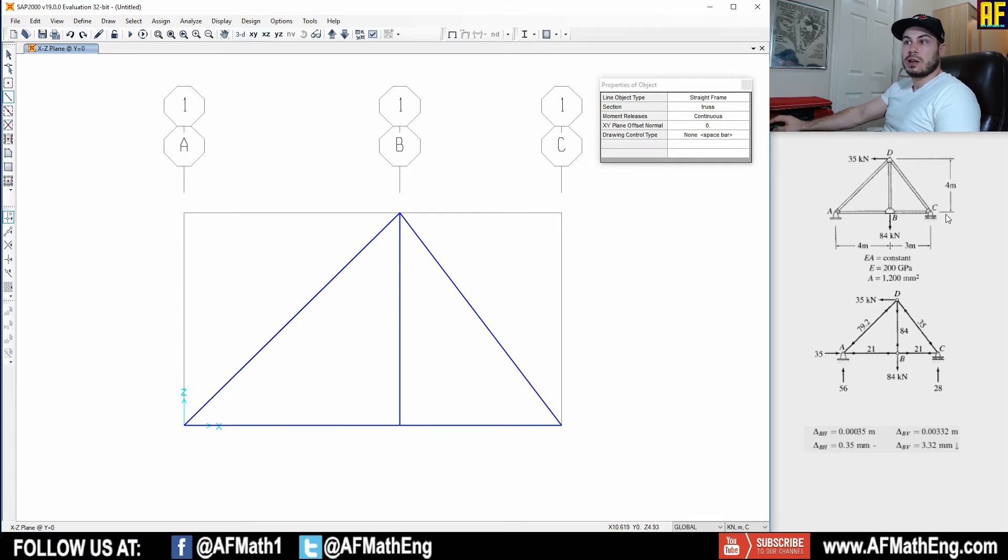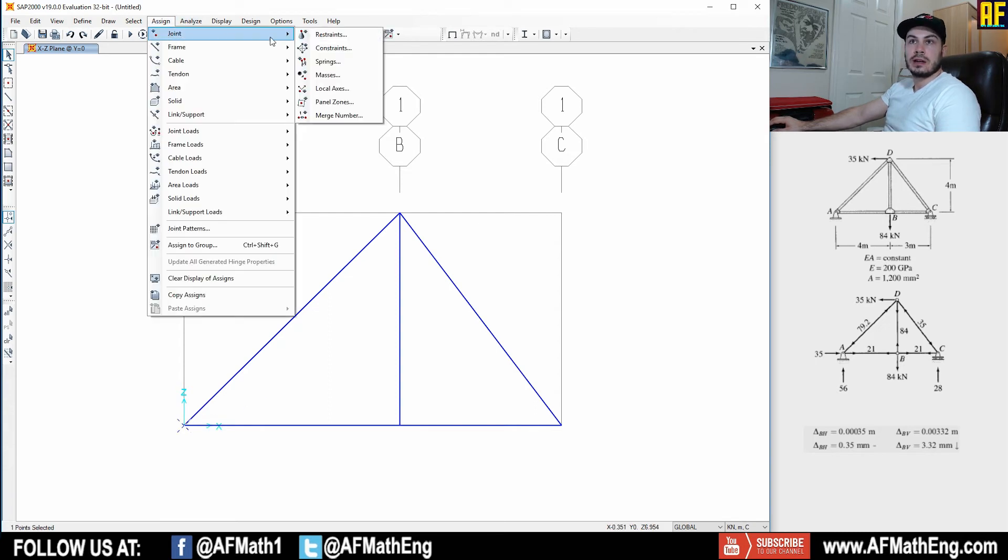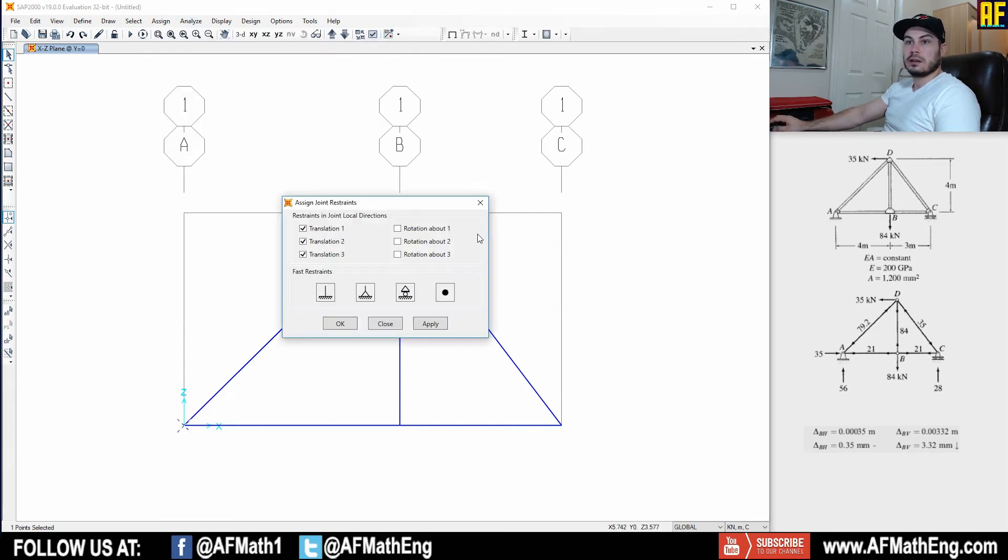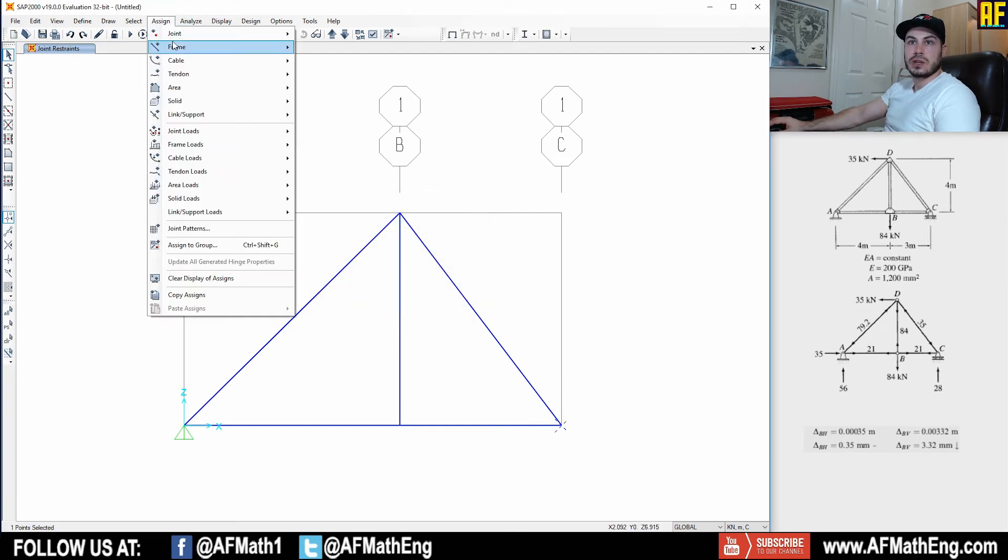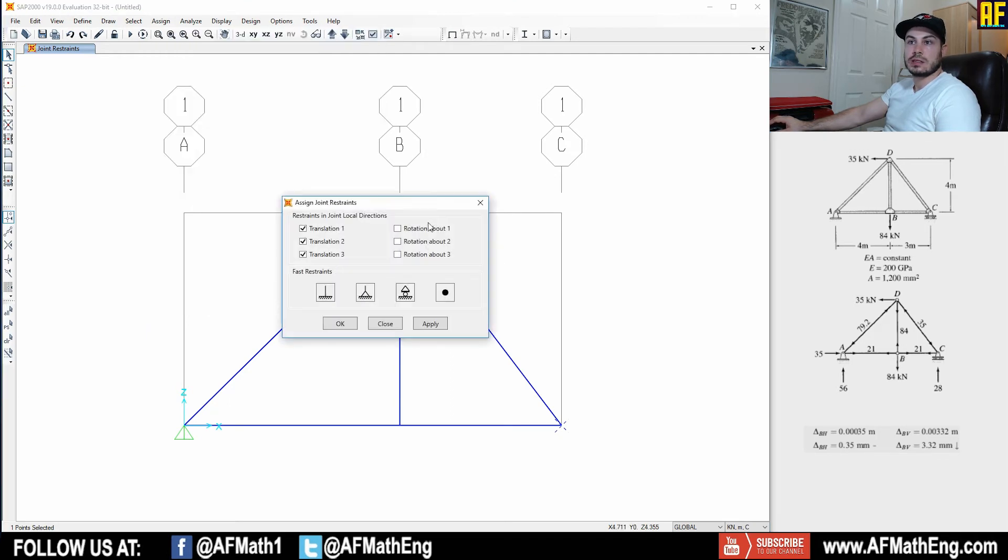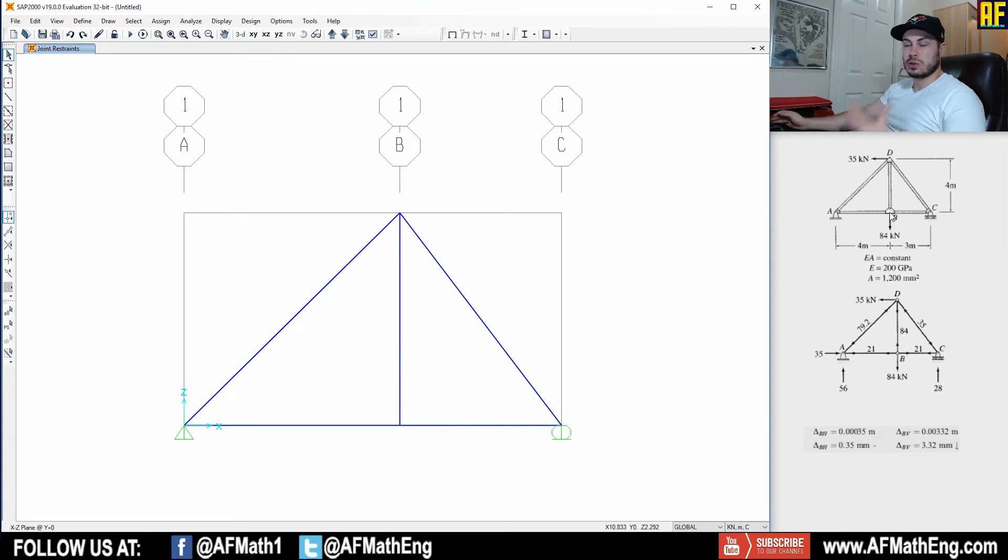Now let's go ahead and assign our restraints. We have a pin and we have a roller there. So a pin at A, let's go ahead and assign a joint restraint. And we have a pin, select the pin, press okay. Go to C, assign joint restraints, select the roller, press okay. And now our restraints and our supports are assigned.